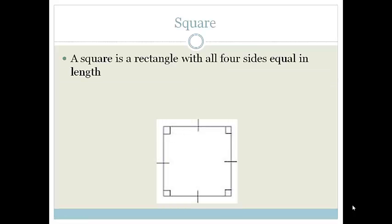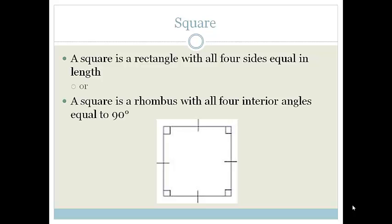There are two ways we can define the square. We can either say a square is a rectangle with all four sides equal in length. In other words, it's a squished rectangle. It has exactly the same properties as a rectangle except it has all four sides equal in length. Or we could say that it is a rhombus with all four interior angles equal to 90 degrees. So they've taken the rhombus and they've straightened it up. That is your square.